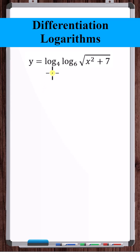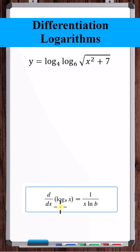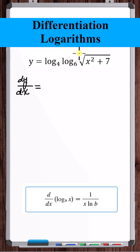Let's find dy/dx. To take this derivative, we're going to use the derivative of a general logarithm. So using the chain rule, we've got log base 4 of something.